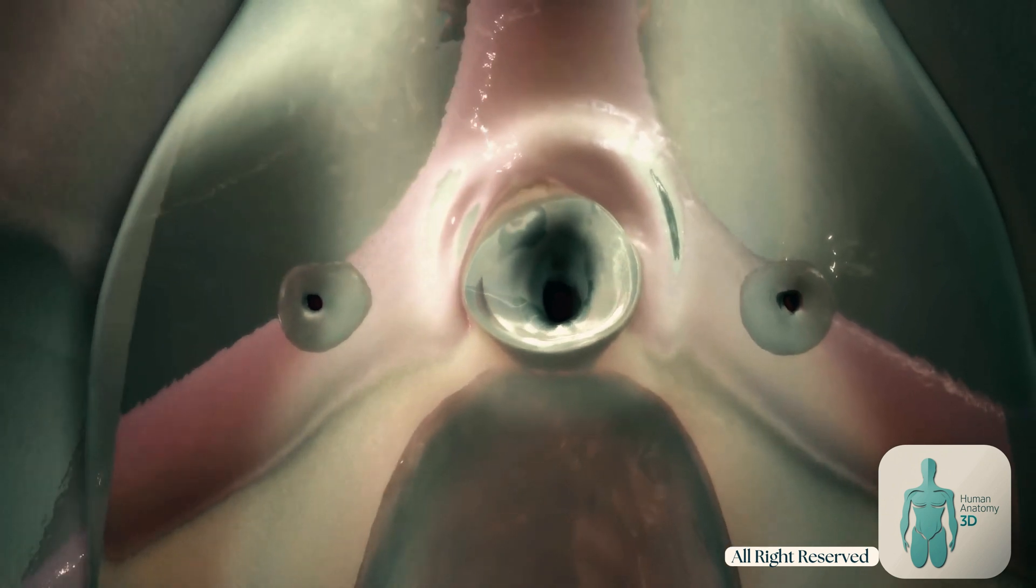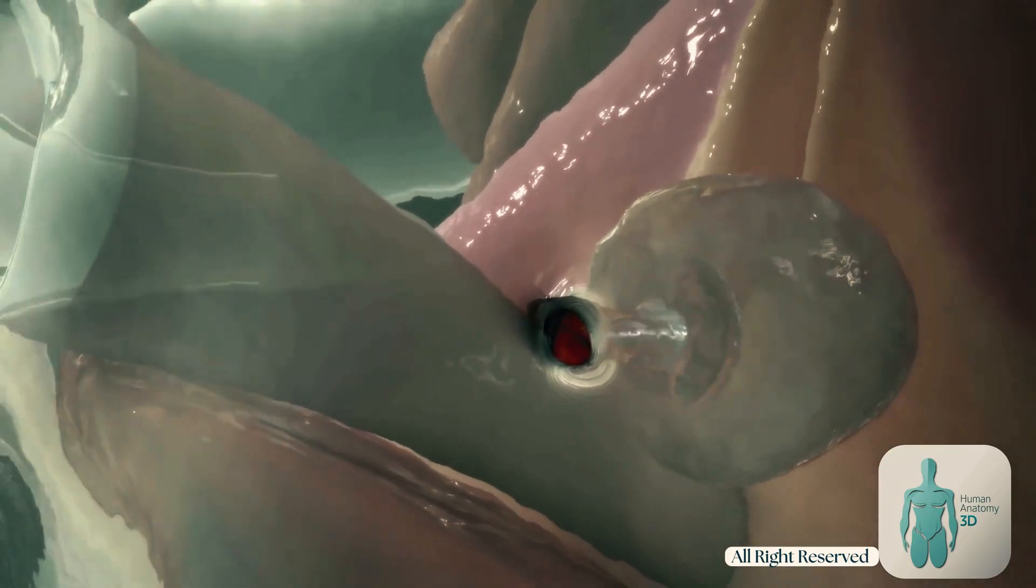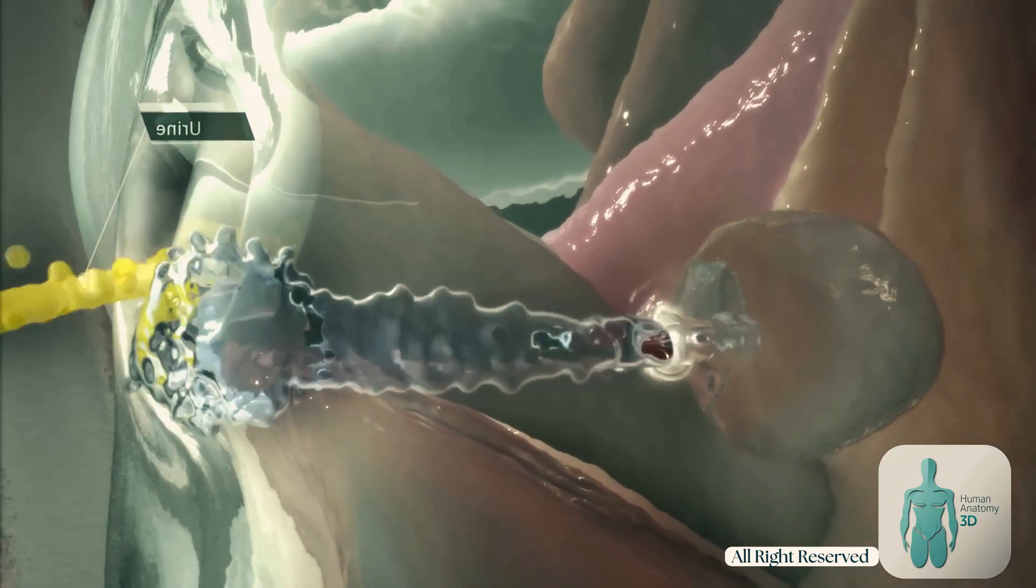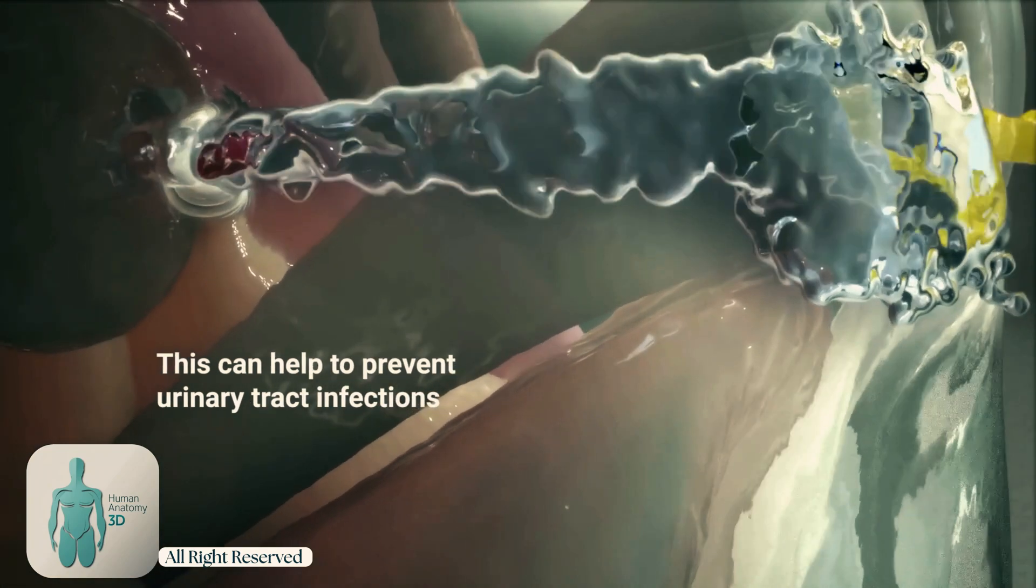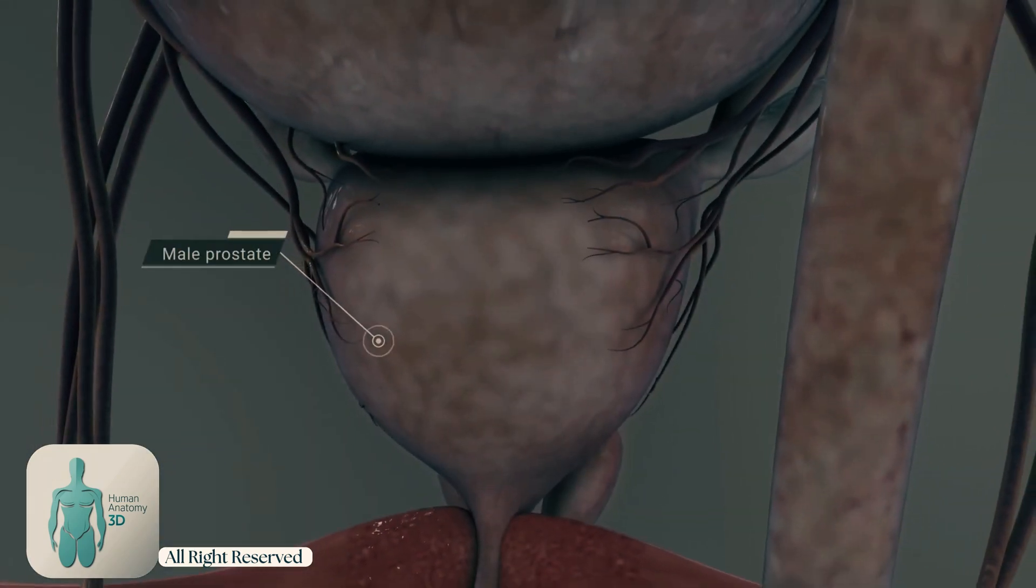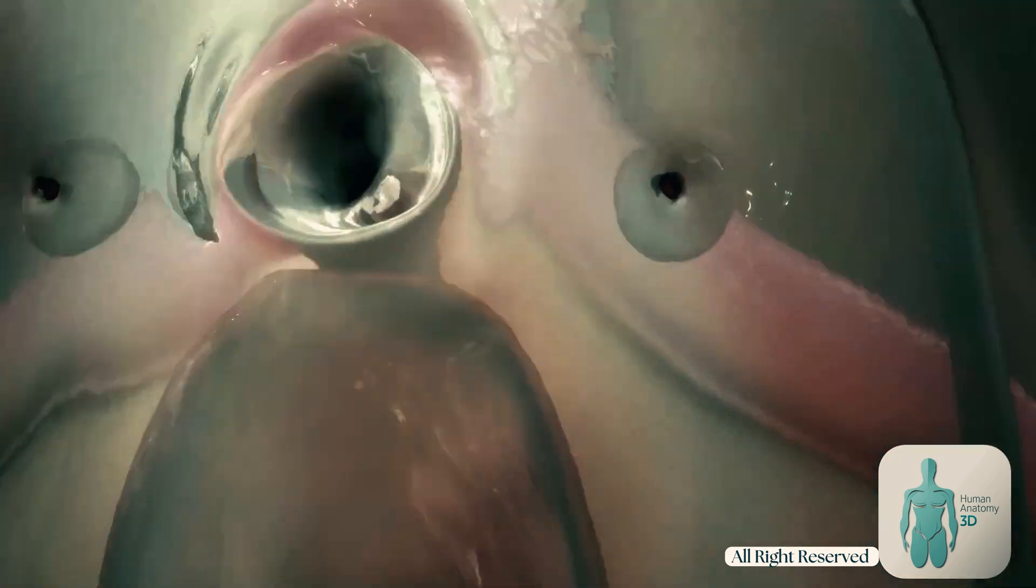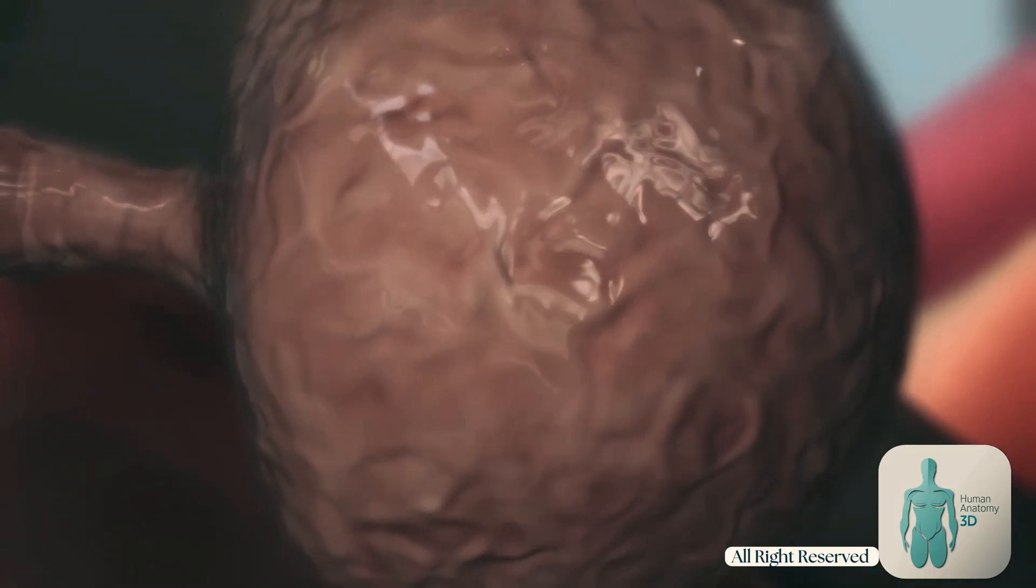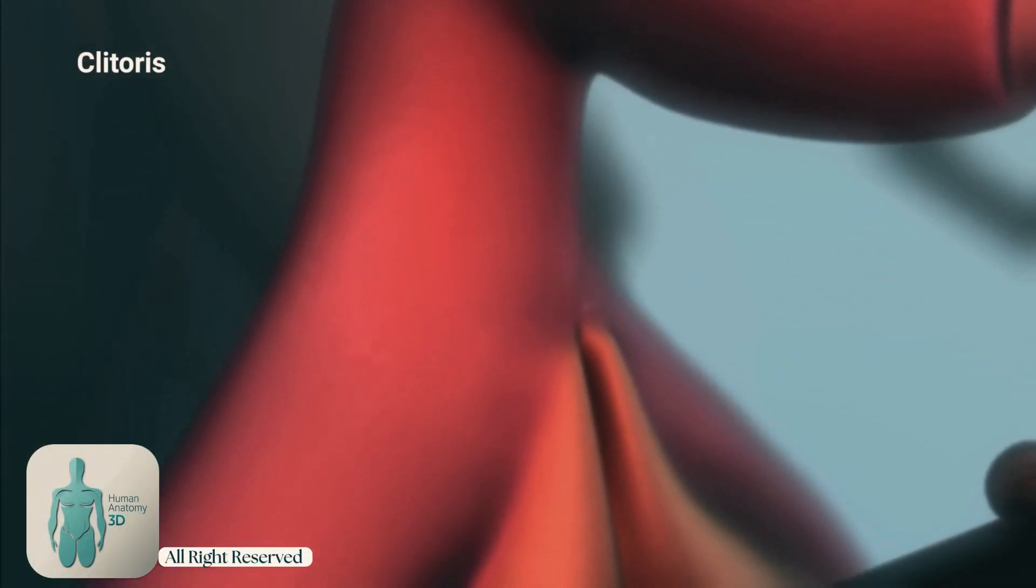The exact function of Skene's glands is still being researched, but they are believed to play a role in both urinary and sexual health. They may secrete a fluid that helps lubricate the urethra during urination. This can help to prevent urinary tract infections.